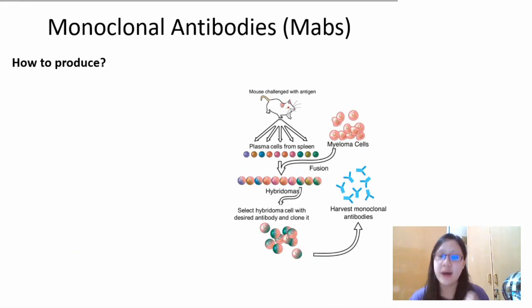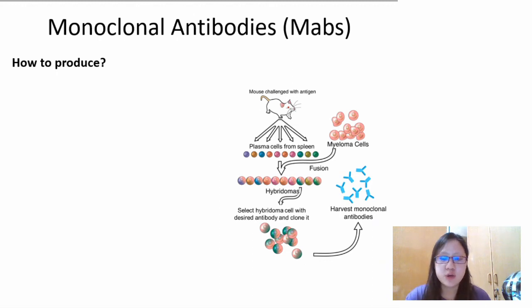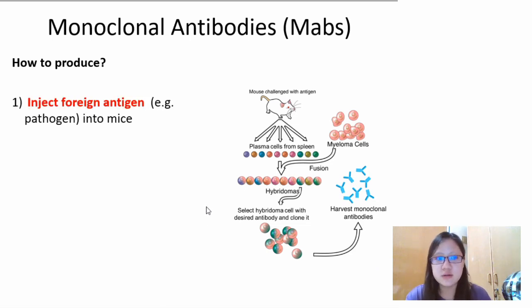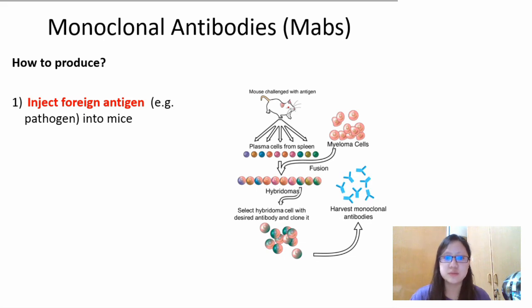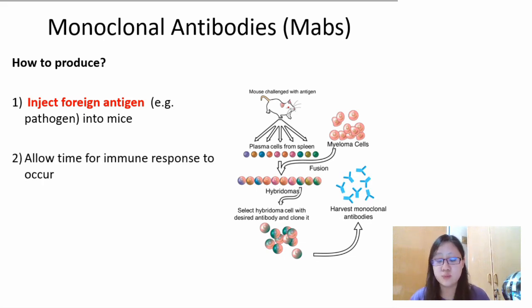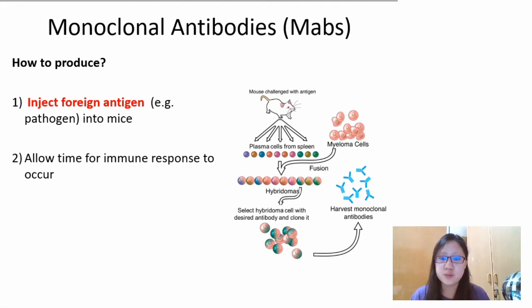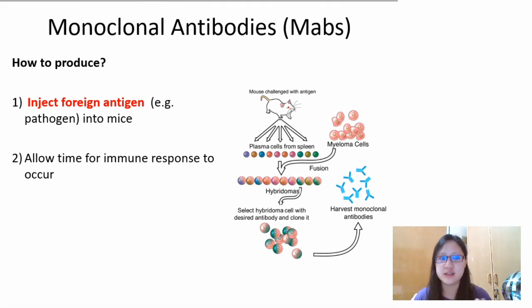To produce monoclonal antibodies from scratch, you need a mouse or small mammal, and the antigen you want the antibody to be specific to — it could be a pathogen or something else. The first step is to inject the foreign antigen, for example a pathogen, into the mouse. Then allow some time for the mouse to have an immune response towards the antigen. Ideally, the mouse wouldn't fall too sick, and the mouse will have an immune response just like yours — activated B-cells, activated T-cells, plasma cells, T helper cells, memory cells, and so on.